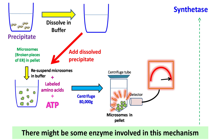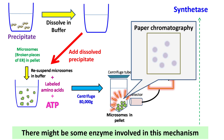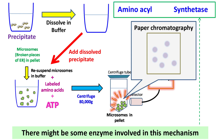When this mixture was analyzed by paper chromatography, they found that the amino acids were attached to adenine. Based on these observations, the enzyme was called aminoacyl synthetase.